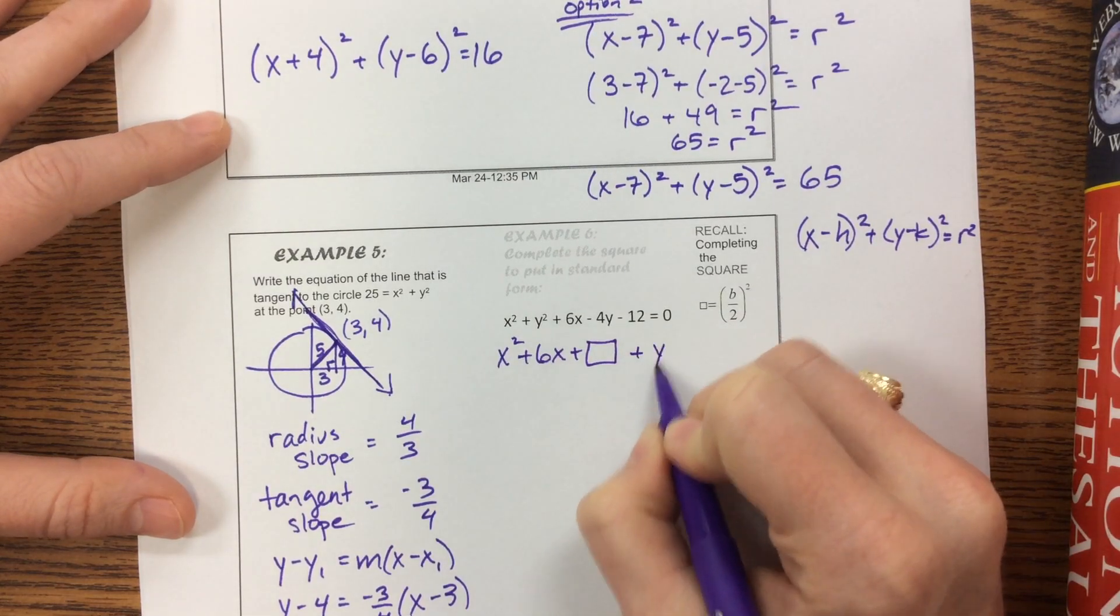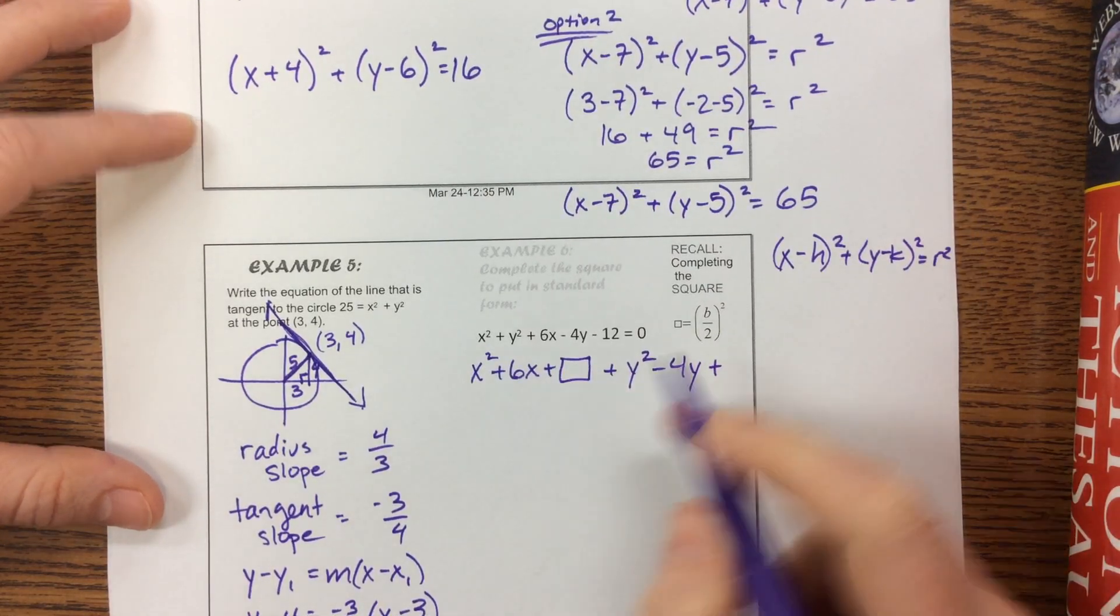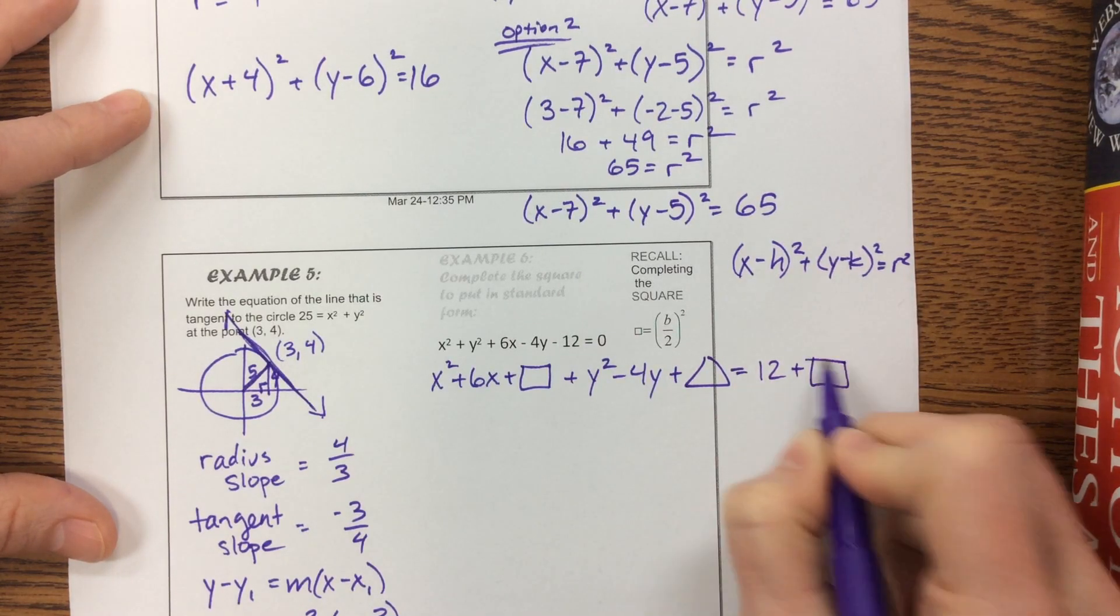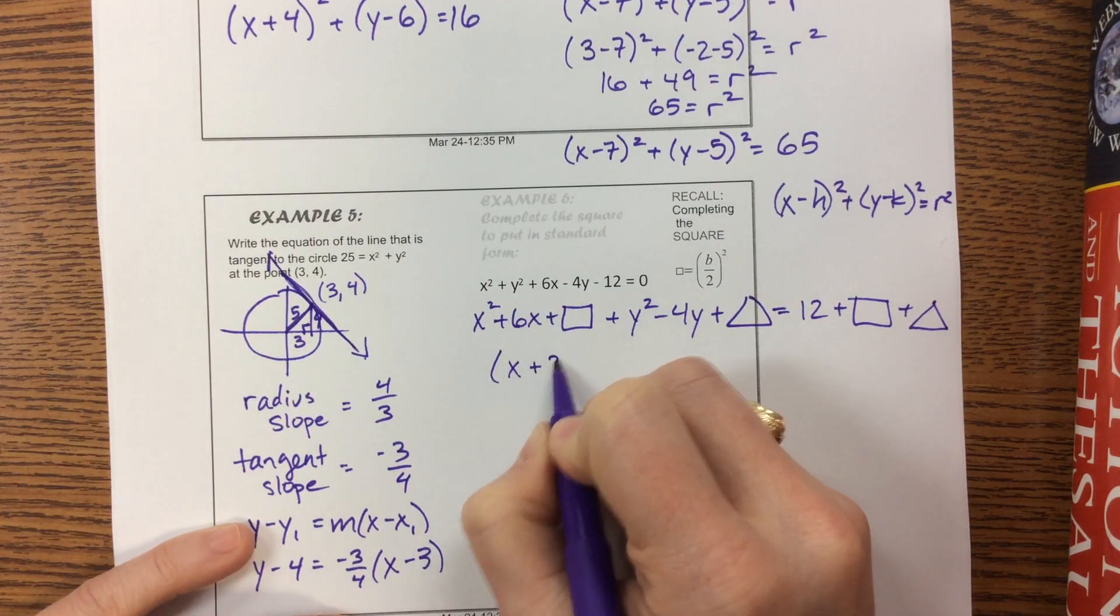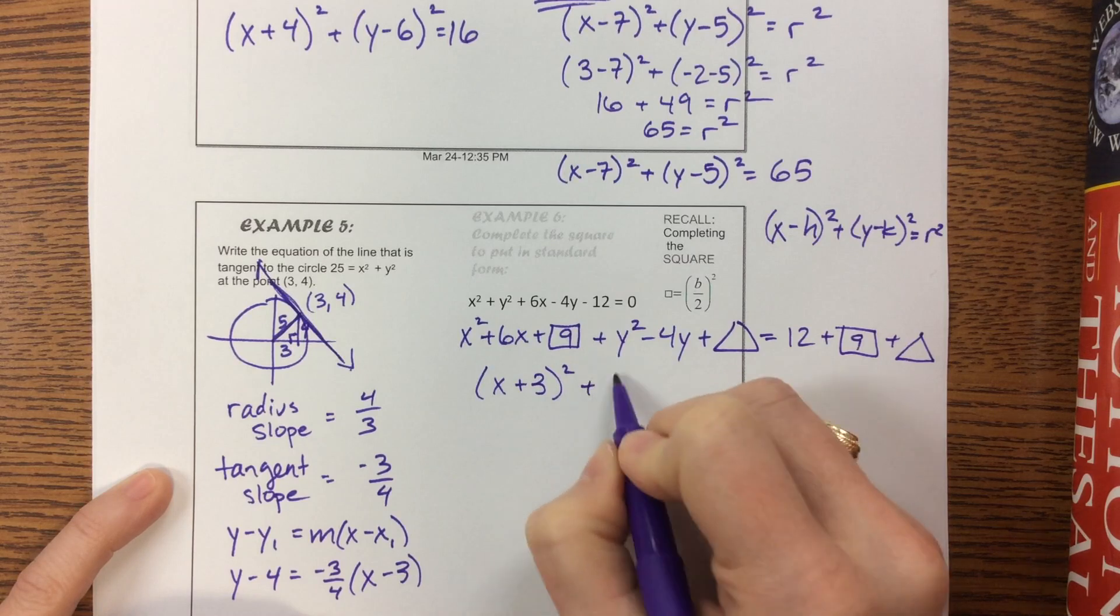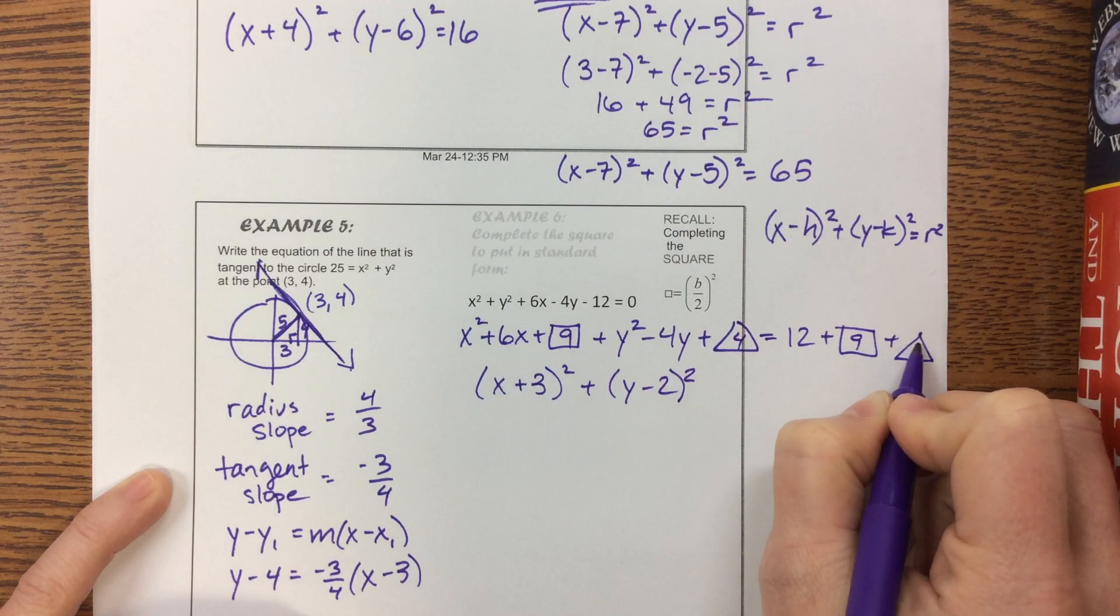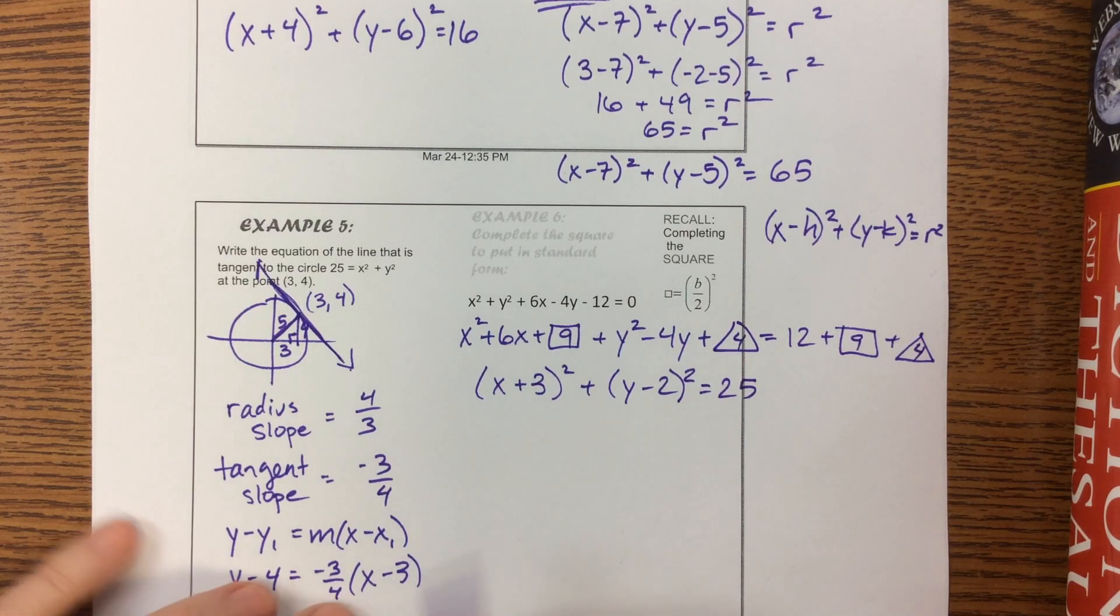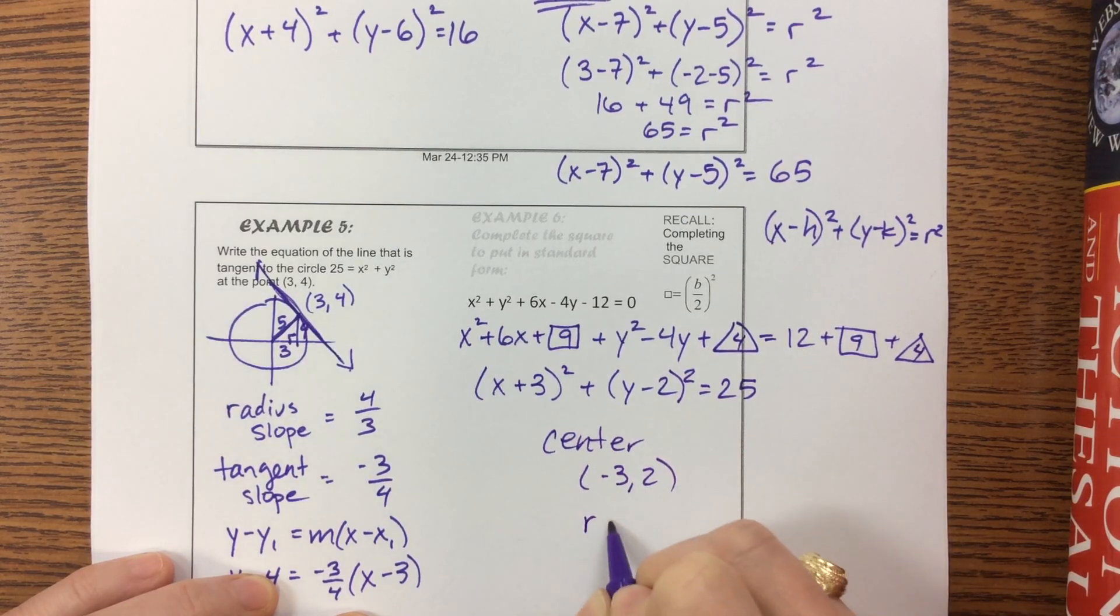I'm going to group my x's and add a box, group my y's and add a triangle. This equals negative 12 moved to the other side, so 12, plus a box, plus a triangle. Complete the square: half of 6 is 3, 3 squared gives 9 in the box. Half of negative 4 is negative 2, 2 squared gives 4 in the triangle. That's 25. The center is negative 3, positive 2, and the radius is 5.